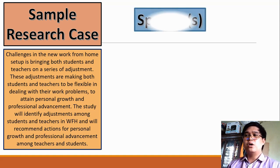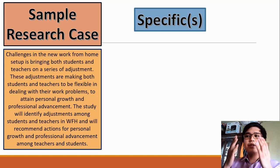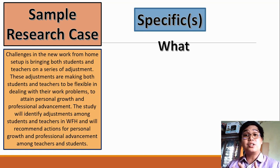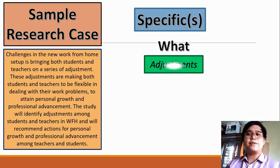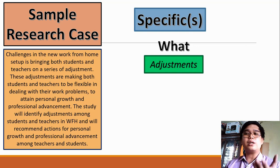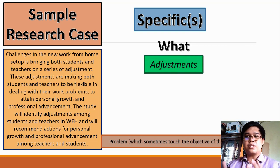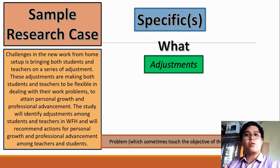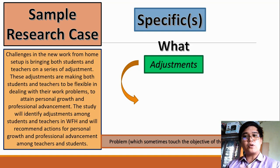In writing a research case, one of the most important things to consider is identifying the specifics. There are three specifics that we must understand. The first specific is the specific what. In this research sample, adjustment is the specific what. The specific what is the problem of the study, which sometimes touches the objective of the study, allowing us to understand what will be the core of the research. In this example, it is all about the adjustments of both students and teachers.